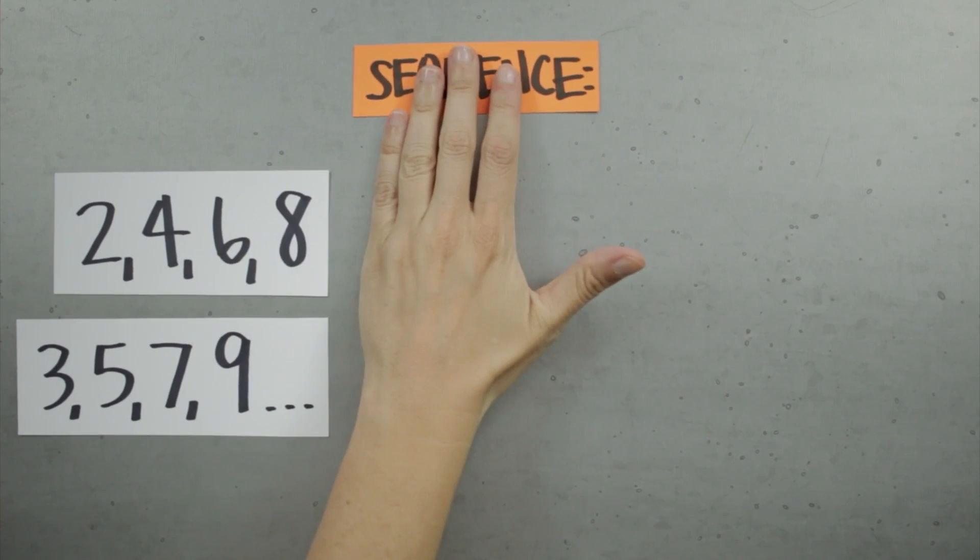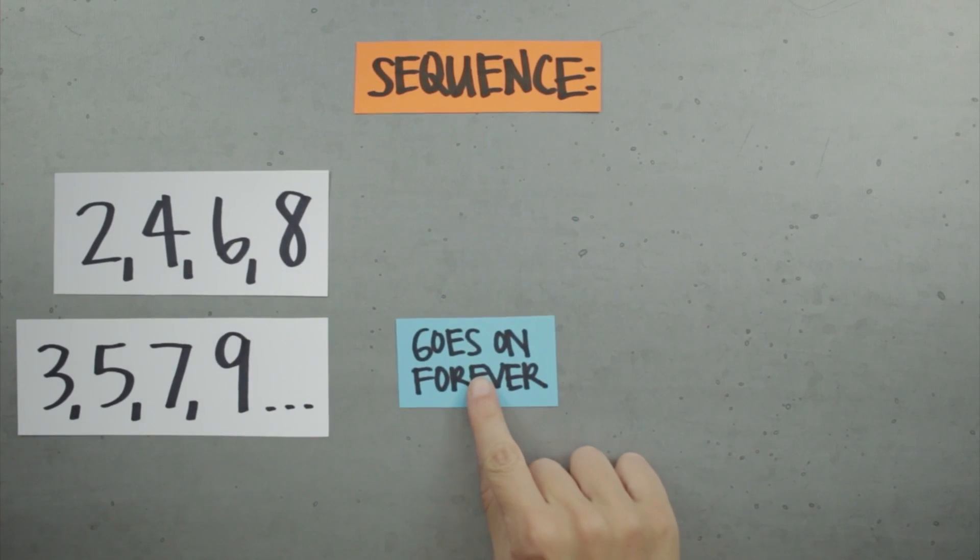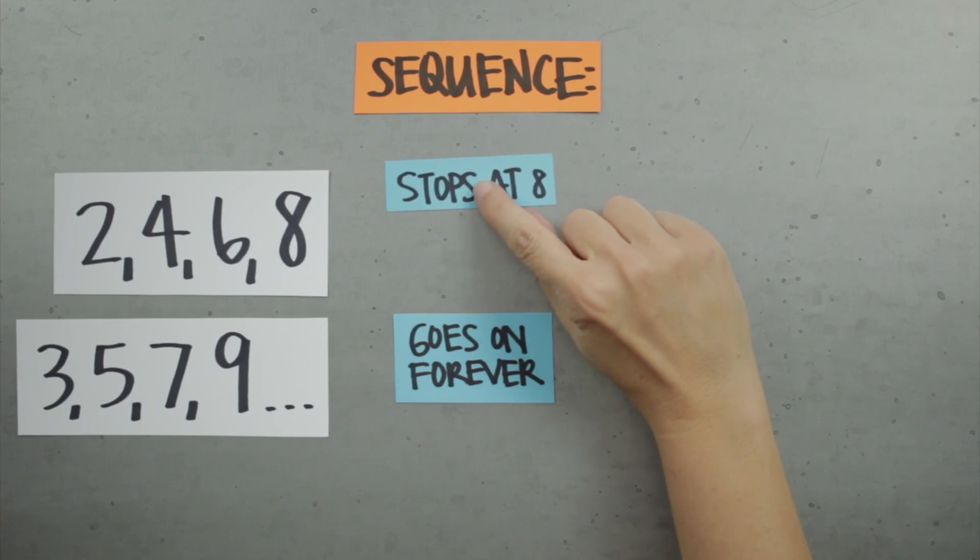The biggest difference between these sequences is that this sequence goes on forever, which we can tell by the dots, and this sequence stops at the last term and doesn't go on forever because it has no dots.